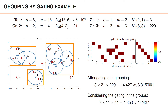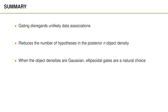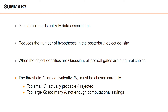This example clearly shows that gating can drastically reduce the number of valid associations. To summarize, gating for n objects allows us to disregard unlikely data associations, reducing the number of hypotheses in the posterior n-object density. When the object densities are Gaussian, ellipsoidal gates are a natural choice. Finally, the gating threshold g, or equivalently the gating probability PG, must be chosen carefully. If the gate is too small, we reject associations whose probability is not negligible. If the gate is too large, fewer associations are rejected and computational savings are smaller. These are tuning parameters that must be adapted so the tracking algorithm achieves good performance with reasonable computational cost.